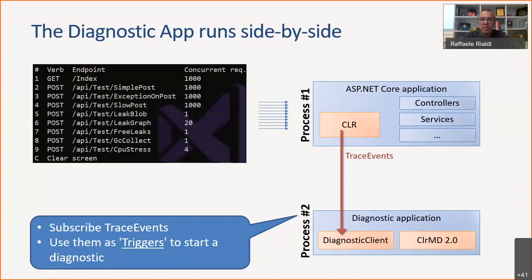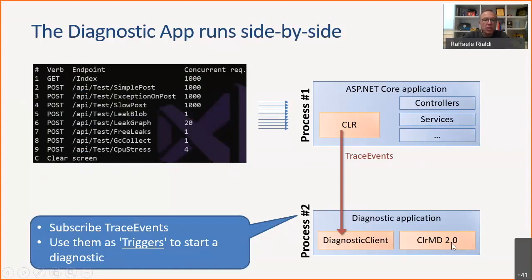You connect to this server and talk directly with the CLR of any application if you have the correct permissions. The events you receive are the same ones you'd see in various performance monitors. It's a similar mechanism to ETW but cross-platform on .NET Core. We then diagnose issues using CLRMD v2, plus some extensions I wrote for this purpose.